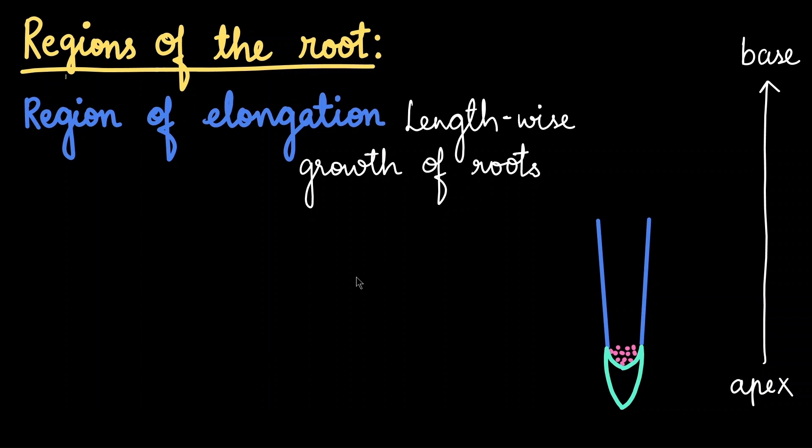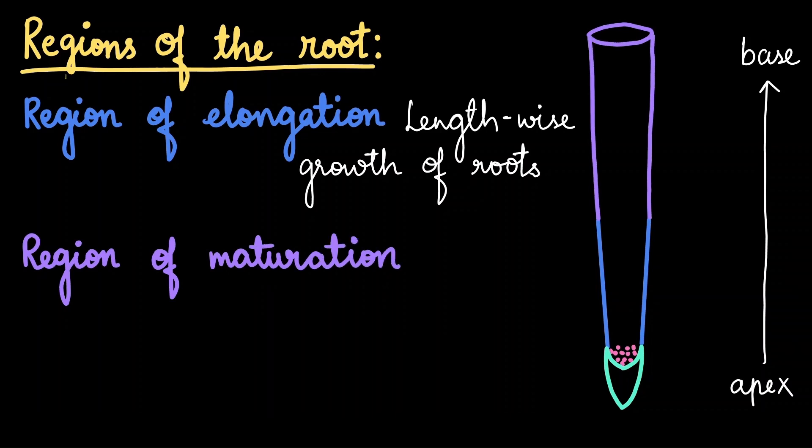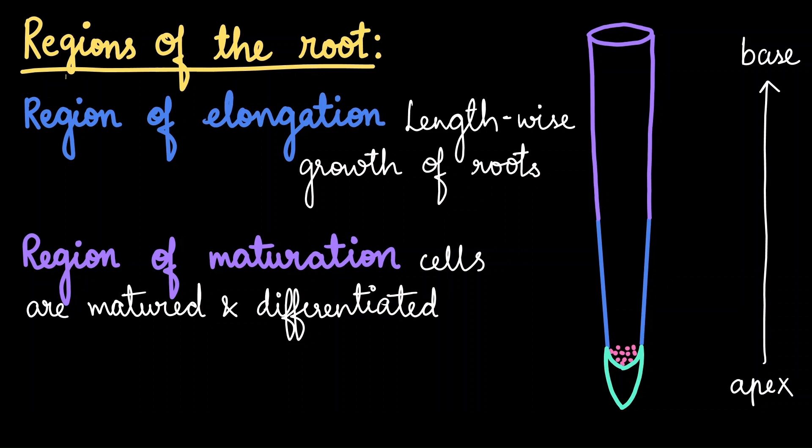But just getting bigger isn't enough. So after elongation, the cells enter into the next region where they finally take up some function. So in the region of maturation, the cells mature and differentiate. Maturation means that the cells are finally getting their complete structural growth and differentiation means that the matured cell has acquired a specialized function. So what sort of specialization are we talking about here?